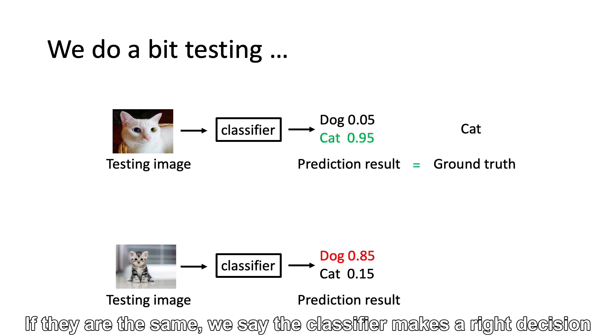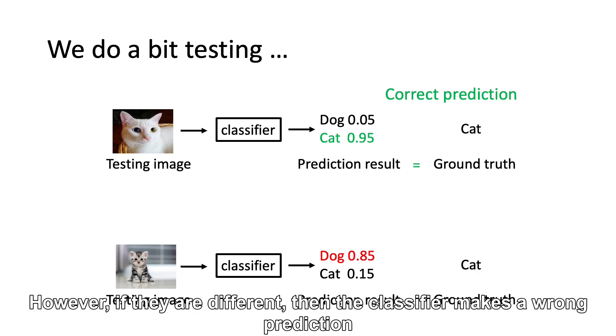Then we compare the prediction with the ground truth label. If they are the same, we say the classifier makes the right decision. However, if they are different, then the classifier makes the wrong prediction.